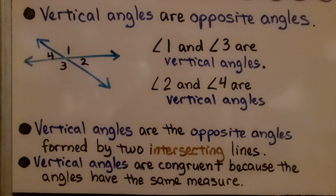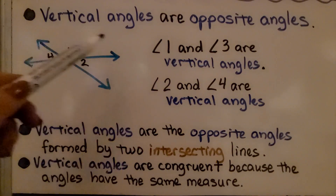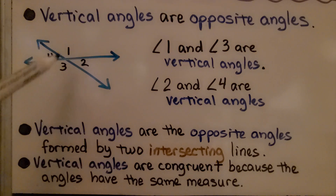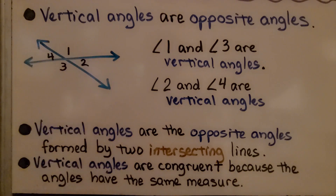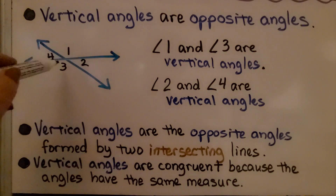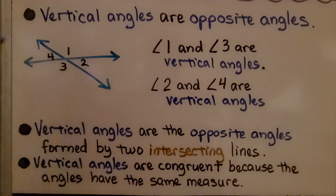Vertical angles are opposite angles — we covered opposite angles in 8.4a. Angles 1 and 3 are opposite each other, so they're vertical angles. Angles 2 and 4 are also opposite each other, so they're vertical angles. Vertical angles are the opposite angles formed by two intersecting lines, and vertical angles are congruent because they have the same measure. Whatever the measure of angle 1 is, angle 3 has the same measure, and angle 2 has the same measure as angle 4.